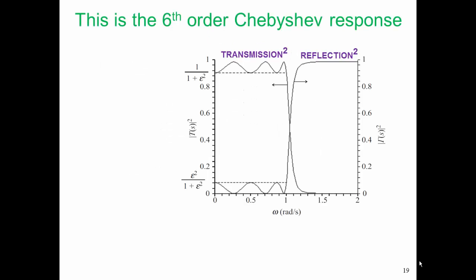This is the response of a sixth order Chebyshev filter, and it's easy for us to see multiple ripples, and that's why I picked this rather than the third order response.